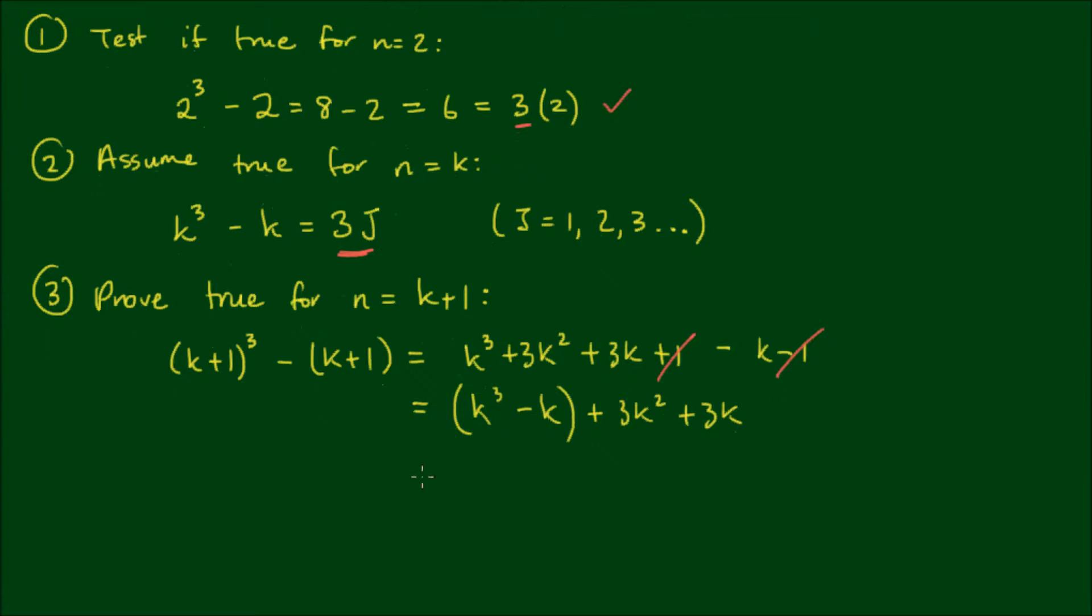So now we can write 3j plus 3 outside of k squared plus k, and then if I factor out a 3, this becomes 3 outside of j plus k squared plus k.